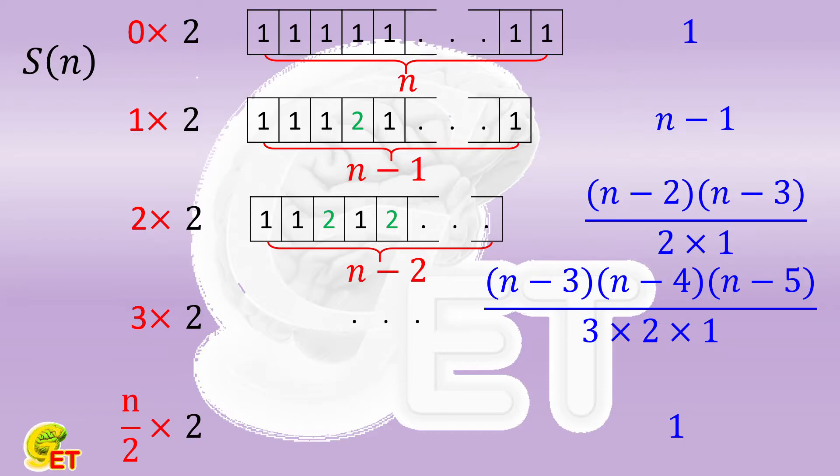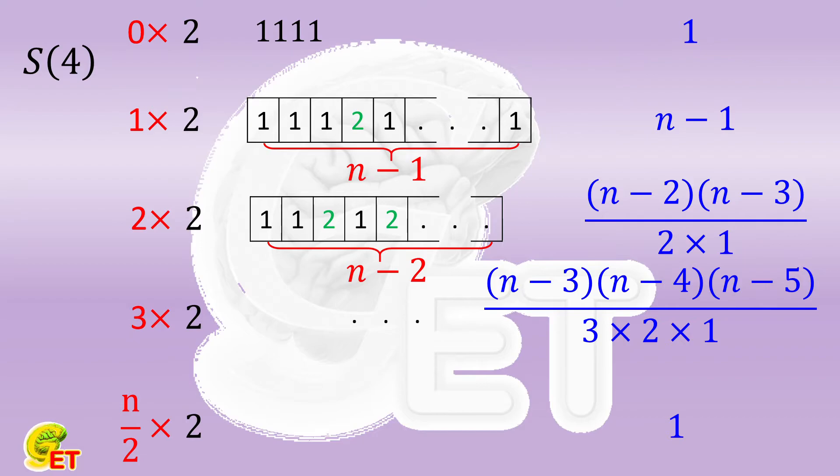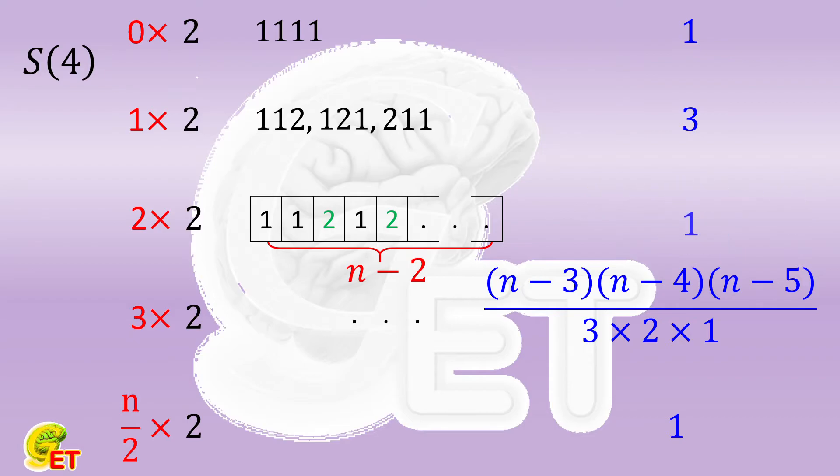There is only one possibility in the first case, which is 1111. The second case has n minus 1, meaning 3 possibilities: they are 112, 121, and 211. The third case has 2 times 1 divided by 2 times 1, meaning also one possibility, and it is 22. So there are 5 in total.